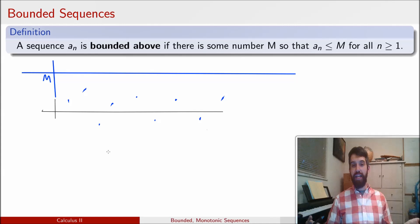Likewise I could say that it is bounded from below if there's some other number M, where all the points are above that M. And I might say that my sequence is bounded if it is both bounded from above and bounded from below.